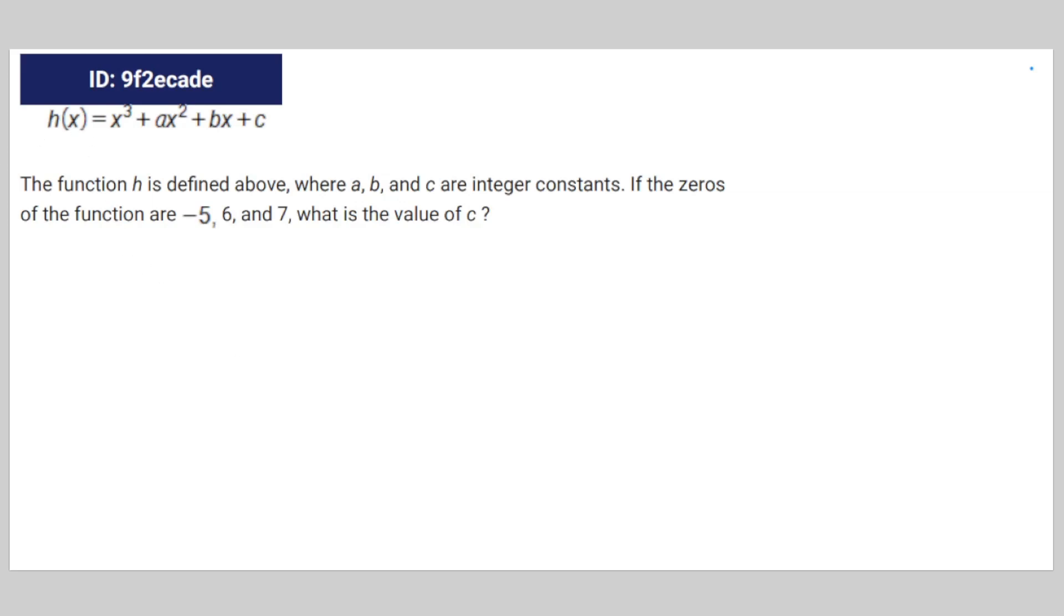So we're given the following math question. The function h is defined above where a, b, and c are integer constants. If the zeros of the function are negative 5, 6, and 7, what is the value of c?